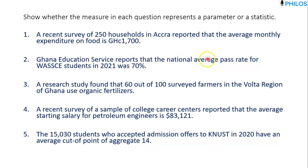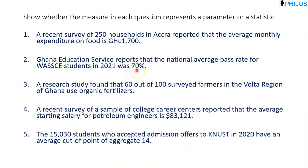Question two: Ghana Education Service reports that the national average pass rate for WASSCE students in 2021 was 70 percent. When they say national, they mean all students — not part of them. Ghana Education Service has data for all 2021 students, so they calculated the mean for the entire group. This average pass rate of 70 percent describes the entire population, so it is a parameter.